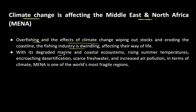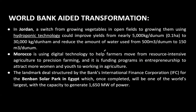MENA is one of the world's most climatically fragile regions. People in these countries depend upon fishing and the fishing industry for their livelihoods. Due to climate change, they have become the most fragile regions. Regarding World Bank-aided transformation — this can be in the form of financial aid as well as expertise that is helping these countries.